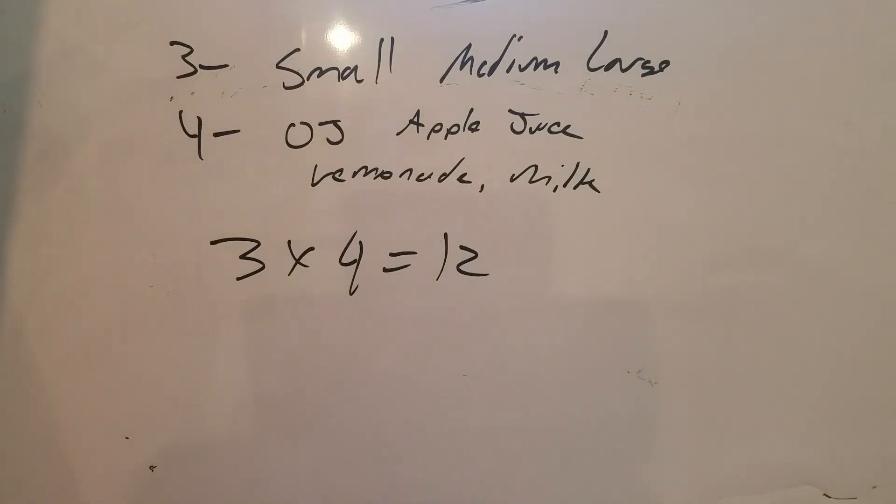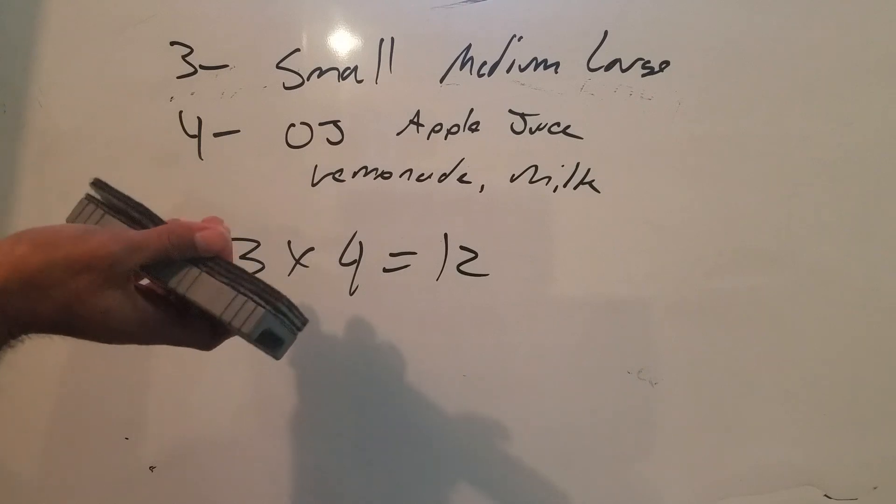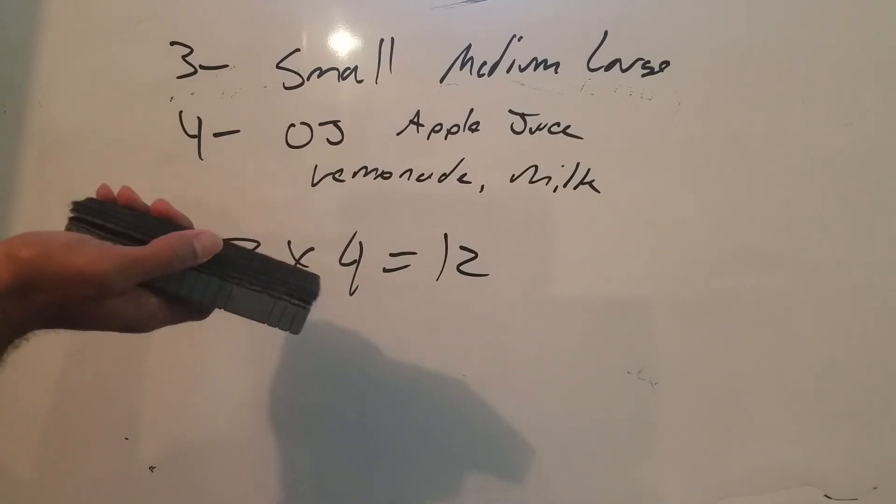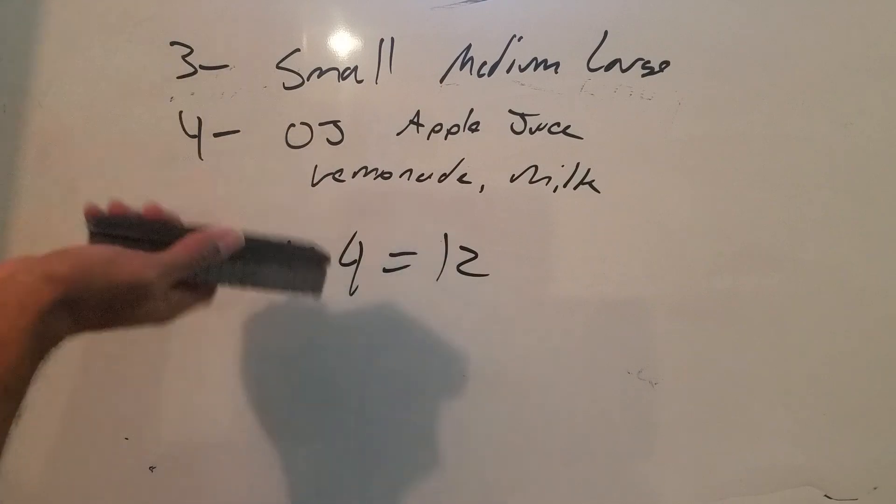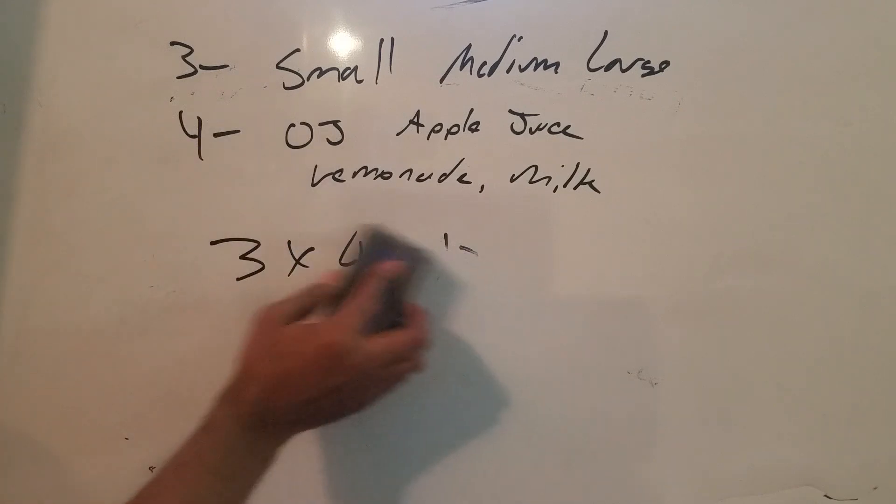Alright, here's one more example. One of the things that you're going to do is called finding the probability of a compound event. When you have to find the probability of a compound event, what you want to do is you want to calculate the number of favorable outcomes and write that as a fraction out of the number of possible outcomes. So we're basically taking this information right here. For example, you might say what is the probability that someone would get a small apple juice. Well that would be one in 12.